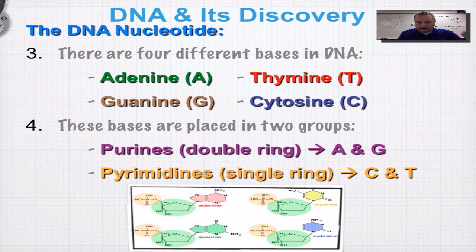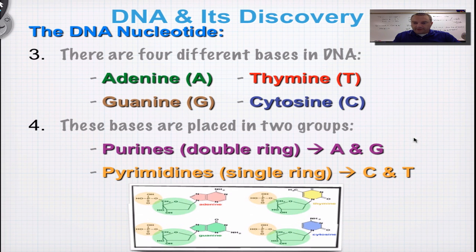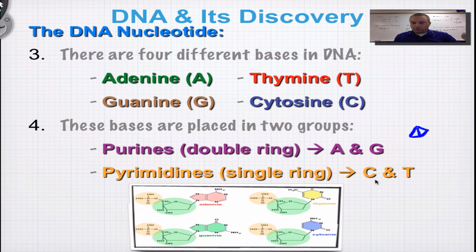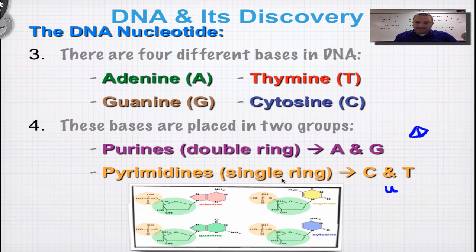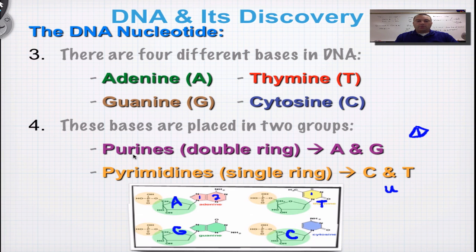The other bases only have a single ring, and these are called pyrimidines. Remember a pyramid — think of Egypt. When we learn about RNA, there's going to be a third base with the symbol U, so to remember the DNA pyrimidines, think of cutting down a single pyramid. Those are your pyrimidines — cytosine and thymine — because they each have a single ring. Here's thymine, and here's cytosine — one ring in each of those.